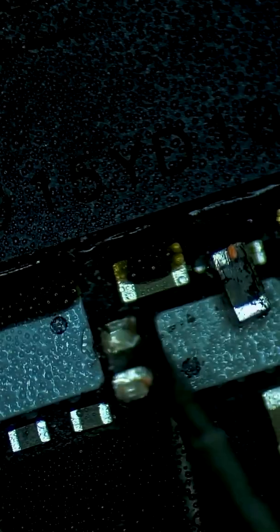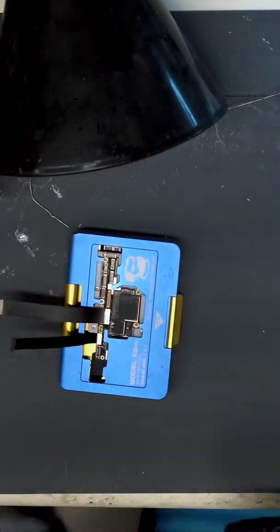We can remove it from the board and then use a specialized jig to test the device. The phone has been repaired.